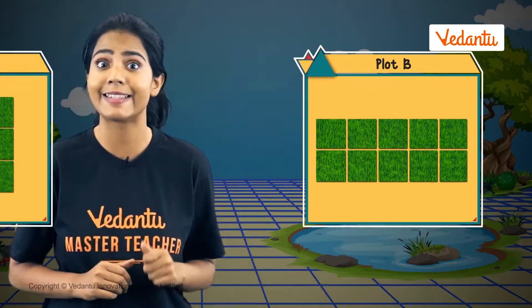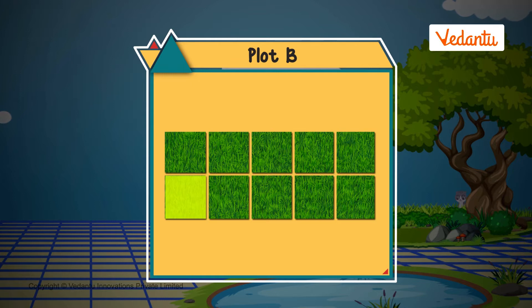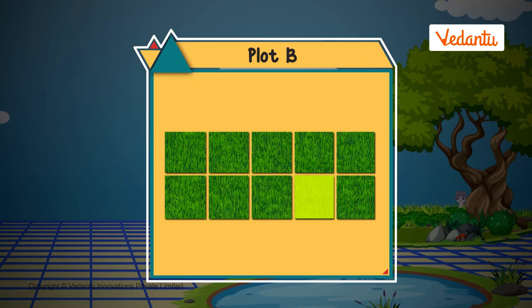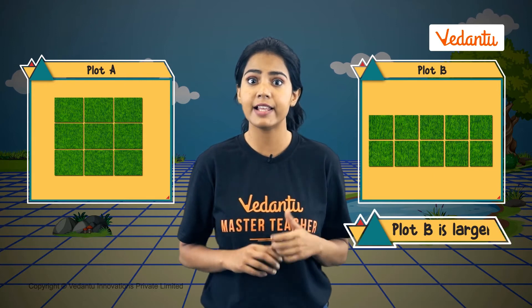Let's count the number of boxes in the second plot: one, two, three, four, five, six, seven, eight, nine, ten. That means plot B is larger.